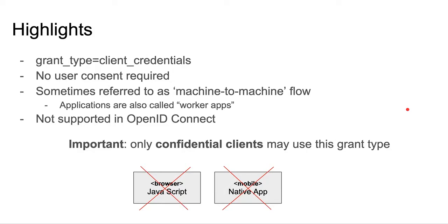Here are a few highlights of it. It's a fairly simple case. The grant type is called client credentials. There is no user consent required — this is the only flow in OAuth where a user is not involved and no user resources are accessed by a client. Sometimes this is also referred to as the machine-to-machine flow, and the type of apps are sometimes also called worker apps. So machine-to-machine, worker apps, client credentials — it's always referring to the same thing.